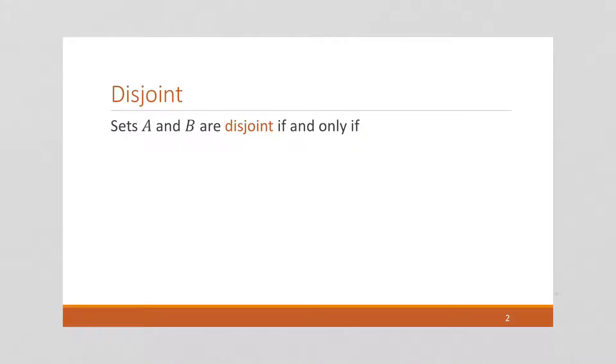So we say two sets are disjoint, A and B are disjoint, if and only if there is no overlap between them. So if we have sets A and B and there's no overlap between them, we say these are disjoint.